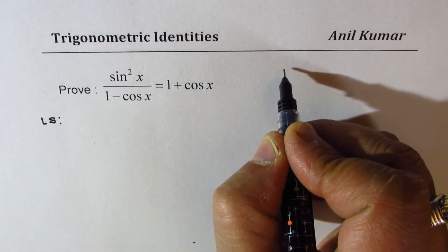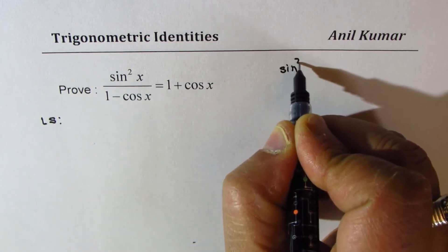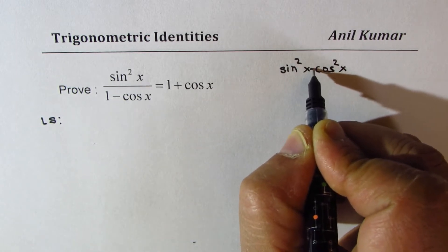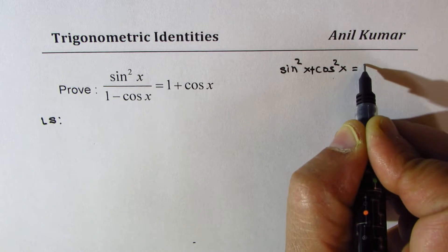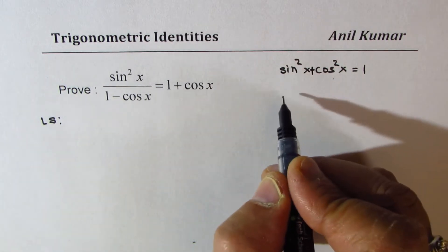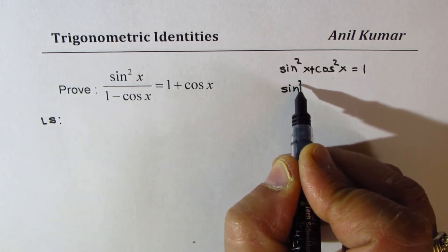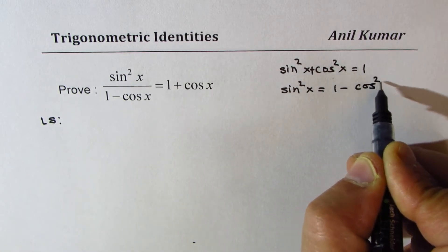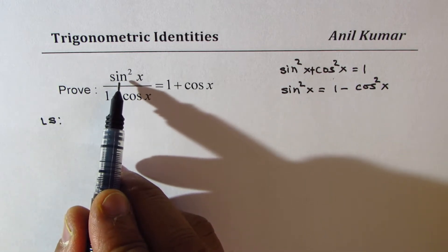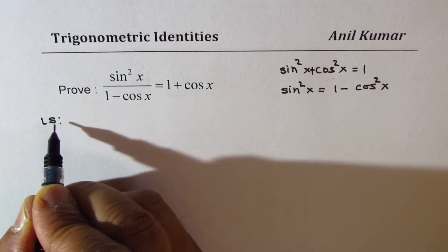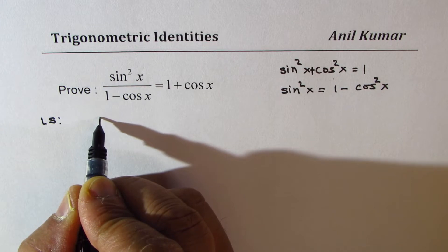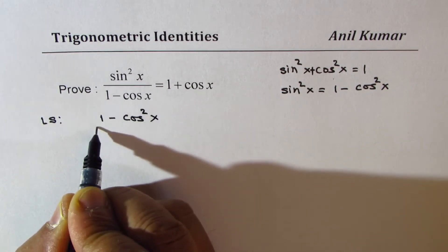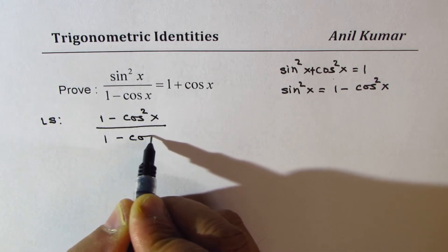We know the Pythagorean identity which is sin square x plus cos square x equals to 1. Now here we could write sin square x as equal to 1 minus cos square x. So we will substitute — instead of sin square x, we will write the left side as 1 minus cos square x divided by 1 minus cos x.